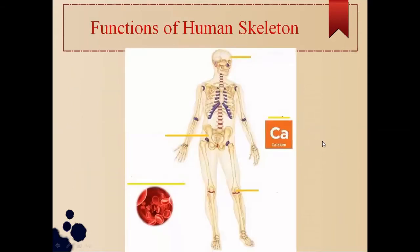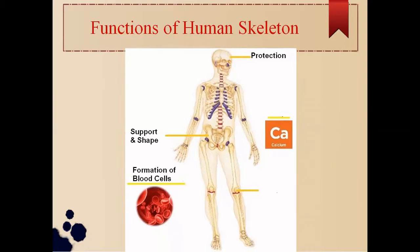Now let's learn the functions of the human skeleton. Number one: it gives support and shape to our body. Number two: it gives protection. Number three: it helps in the formation of blood cells.